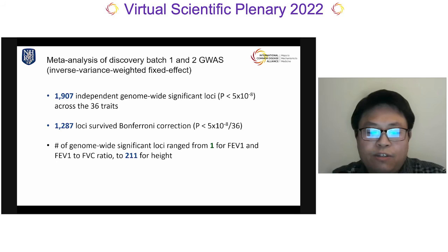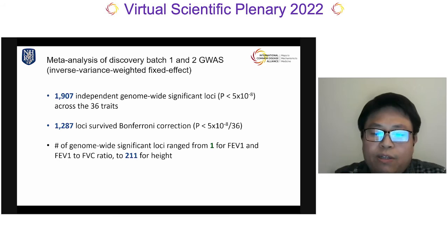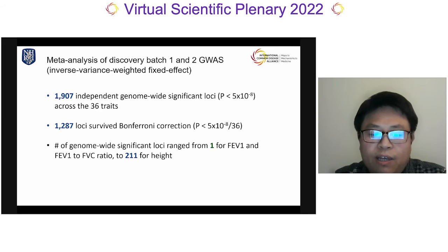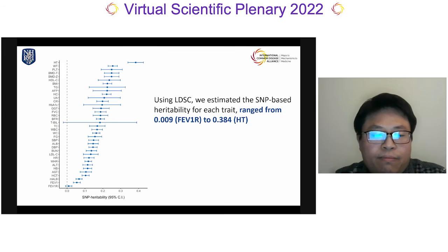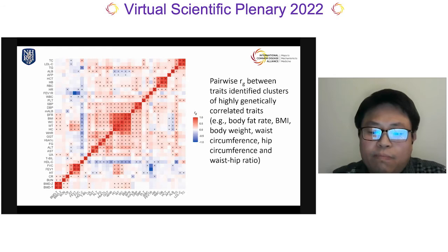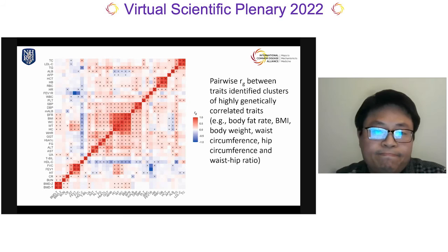We meta-analyzed discovery batches 1 and 2 using an inverse variance weighted fixed-effect approach. We identified 1,907 independent genome-wide significant loci across the 36 traits, among which 1,287 loci survived Bonferroni correction for the number of traits tested. The number of genome-wide significant loci per trait ranged from 1 for FEV1 and FEV1/FVC ratio to 211 for height. We estimated SNP-based heritability for each trait and pairwise genetic correlations between traits, identifying clusters of highly genetically correlated traits — for example, body fat rate, BMI, body weight, waist circumference, hip circumference, and waist-hip ratio appear to be highly correlated.